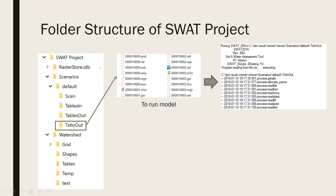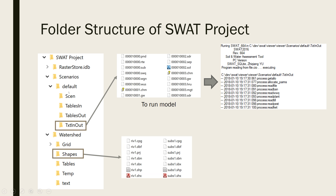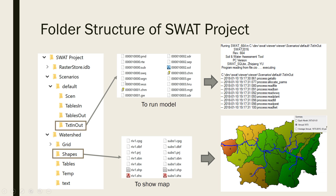Another important folder in this project is the shapes folder. The shapes folder will hold all the shape files generated during the watershed delineation process. The SWOT Viewer will use two of them to draw the results on the map: the riv1 shapefile is for the river, and the SUBS1 shapefile is for the subbasin. The viewer will load these two shapefiles and dynamically load the results to show them on the map.